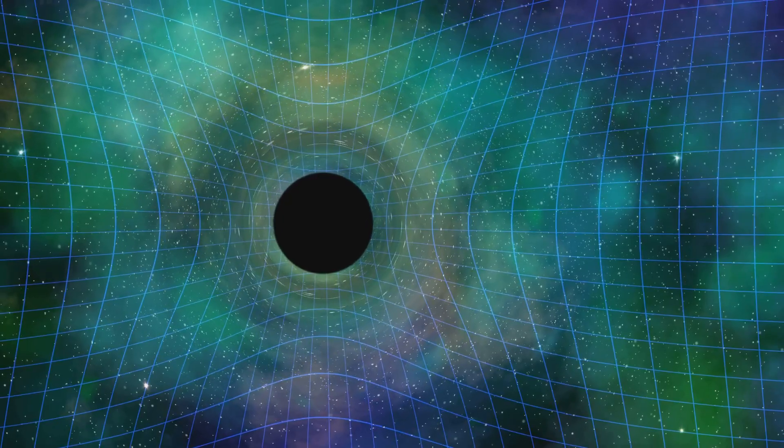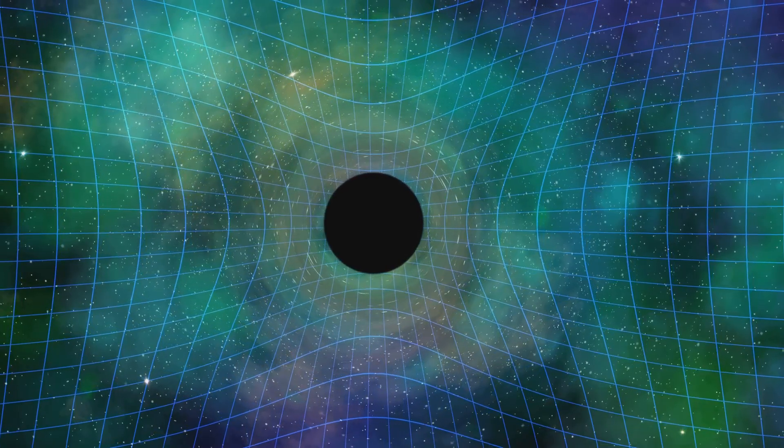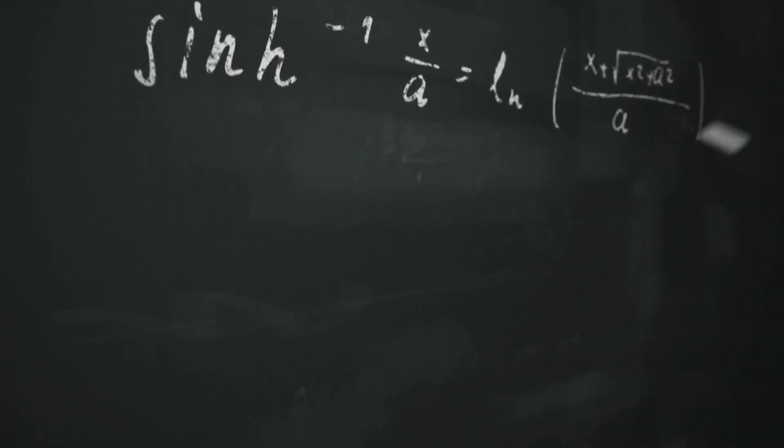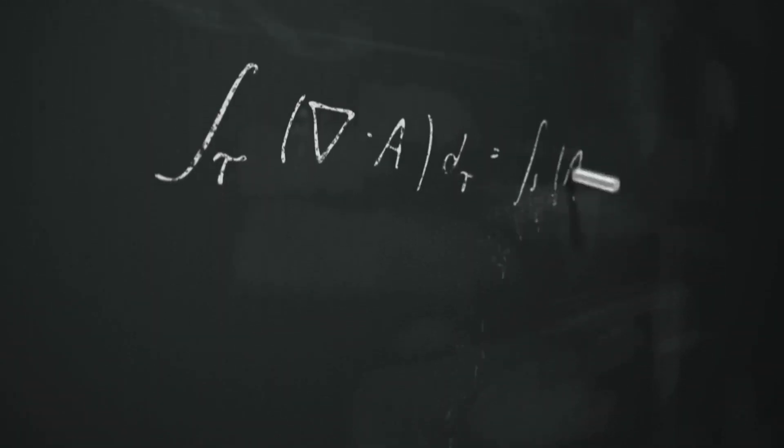This elegant law states that every object in the universe attracts every other object with a force directly proportional to the product of their masses, and inversely proportional to the square of the distance between their centers.